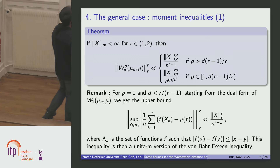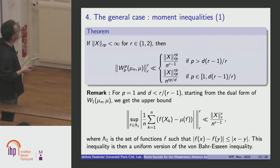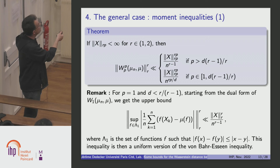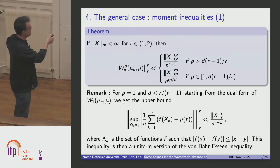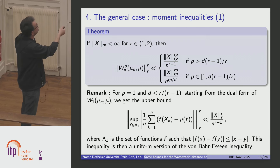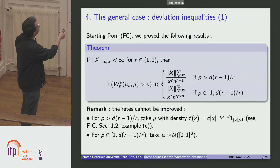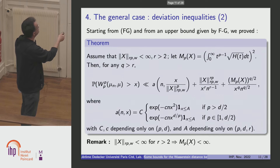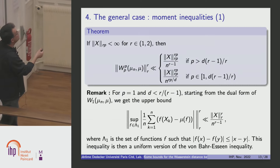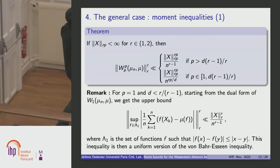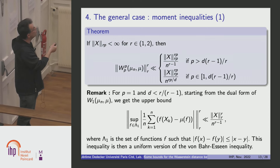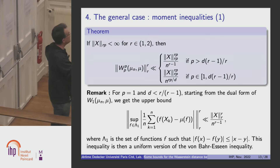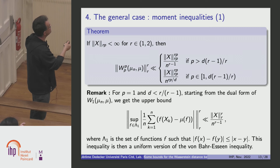Now, about moment inequalities. If I look at the moment of order R of WP to the P — again, if R is between 1 and 2 — you see the difference from the previous bound: here I have the strong moment for X, whereas before it was the weak moment. It is exactly the same kind of inequality. This is, again, the Fuk-Nagaev inequality. We have the same cut regarding the dimension: in the small dimension case, you get what we proved for D equal 1; if D is large, you get a different rate N to the power R times P divided by D.